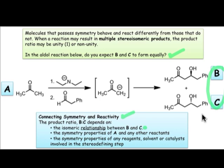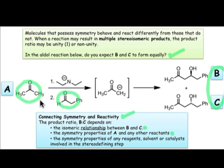But before we completely decide that, we need to take into consideration other factors, such as the symmetry property of A and all of the other reactants that are involved. In this case, both of these reactants are achiral, and so we might again expect no special influence by the reactants. Finally, we also need to consider other aspects that make up the chemical environment, such as reagents. This diethylamide is achiral as well, so we don't see any special influence on the stereochemistry from this group.